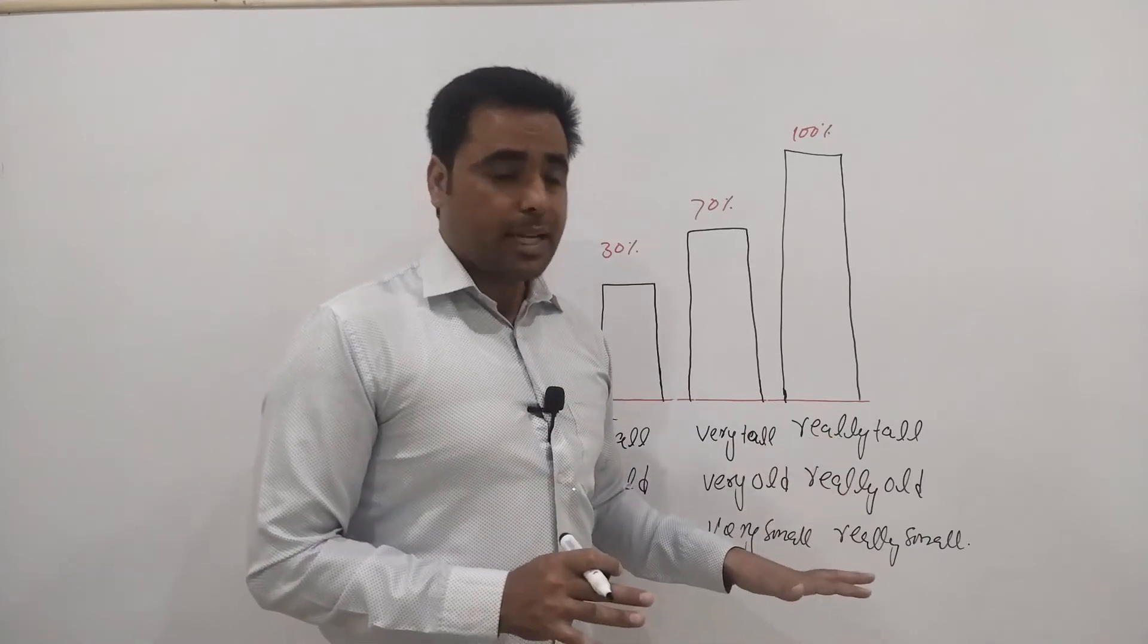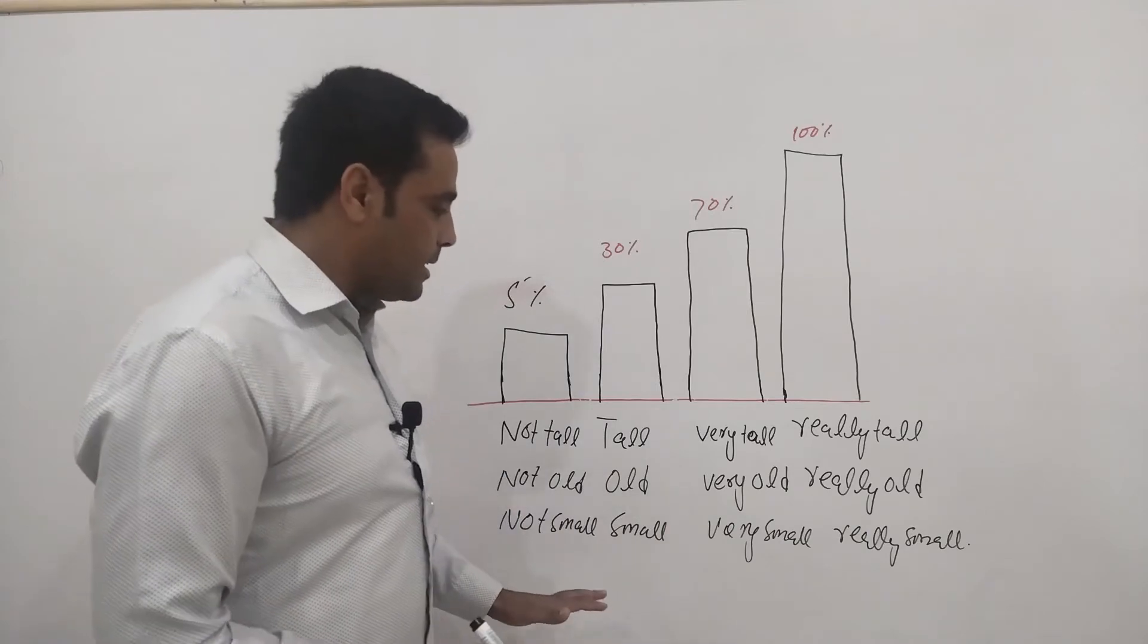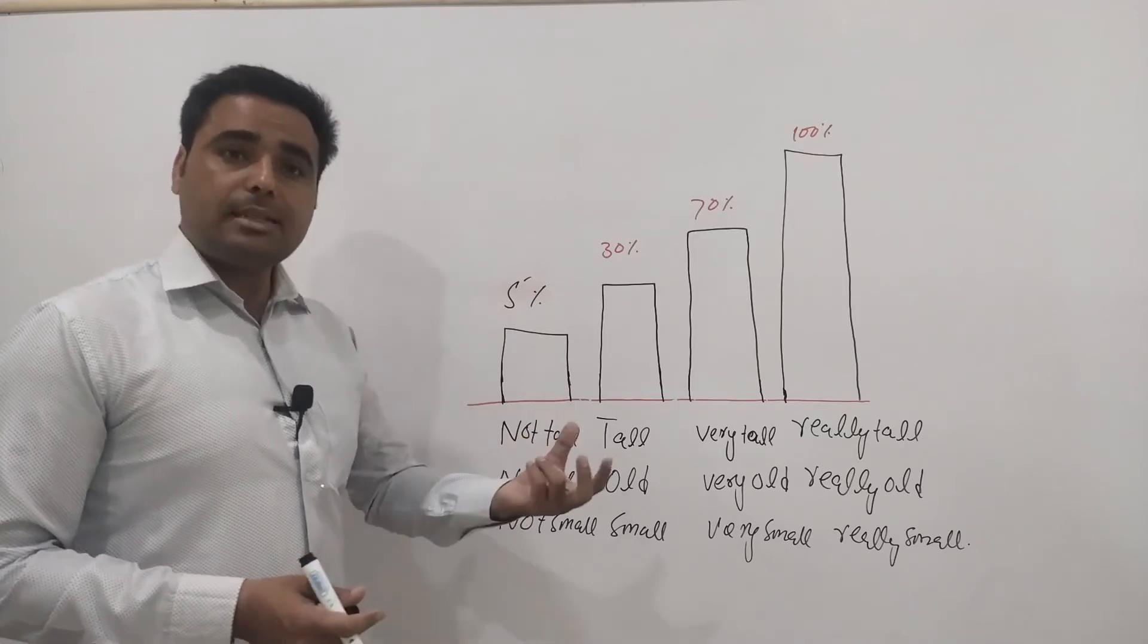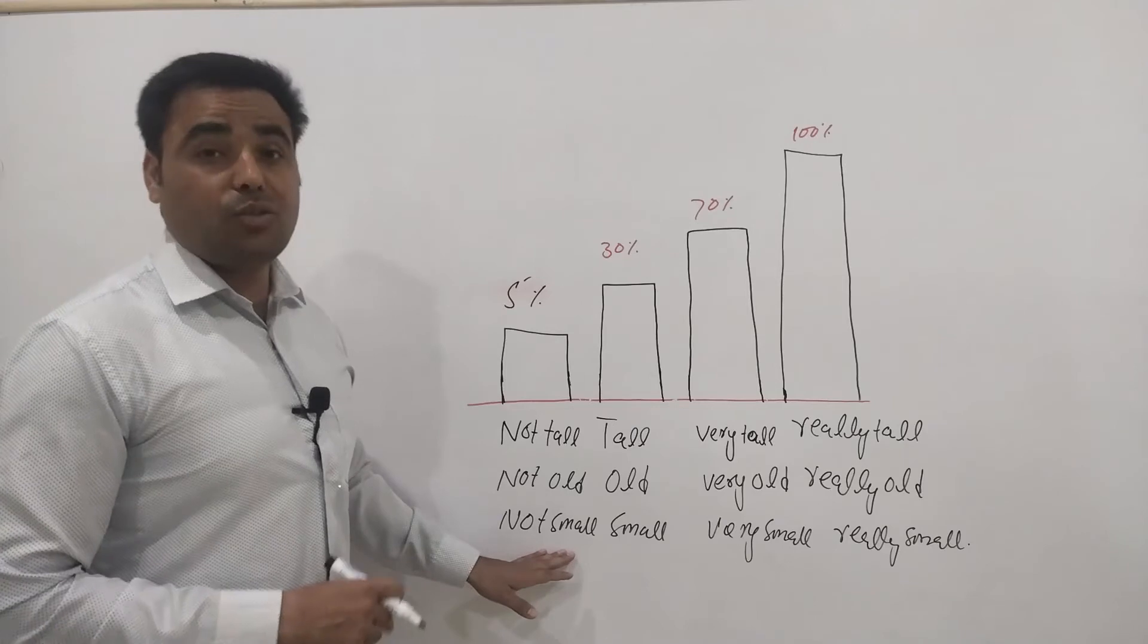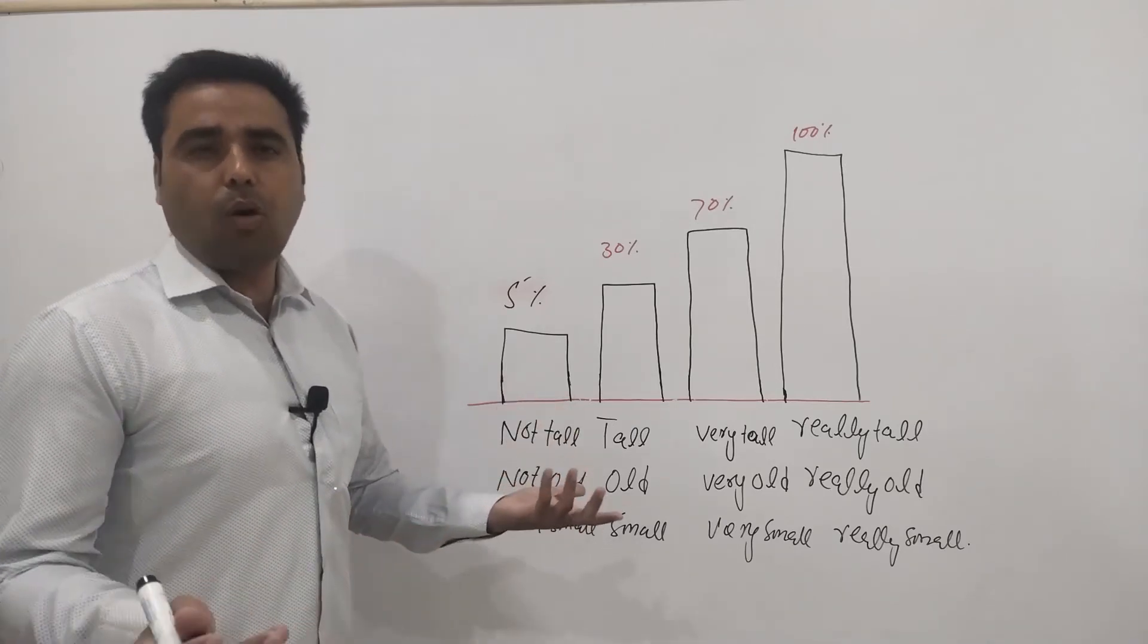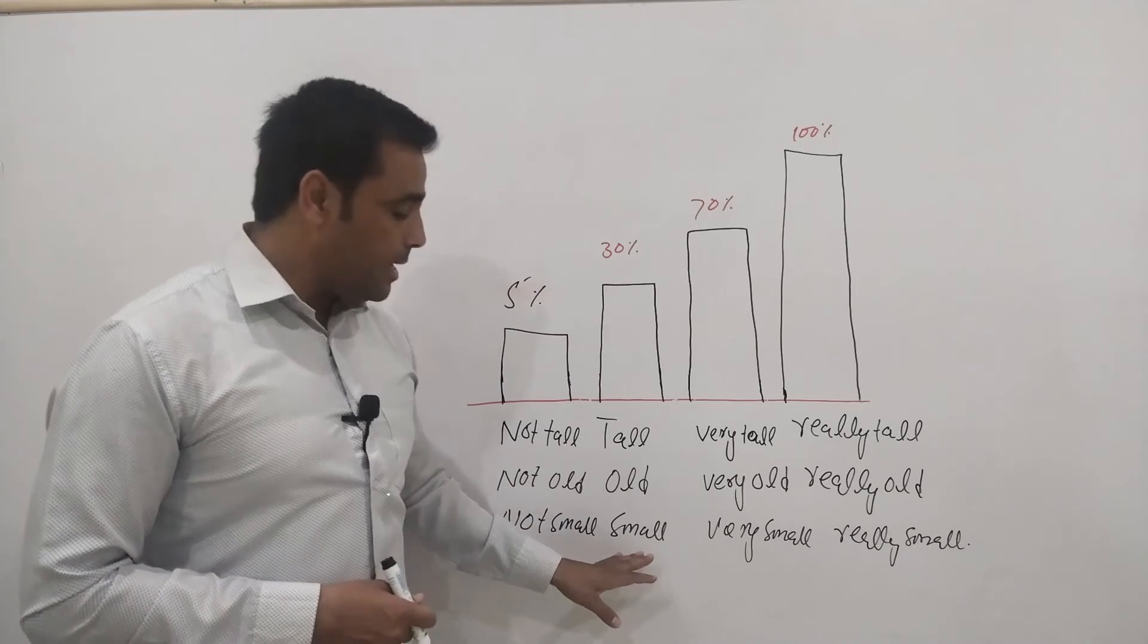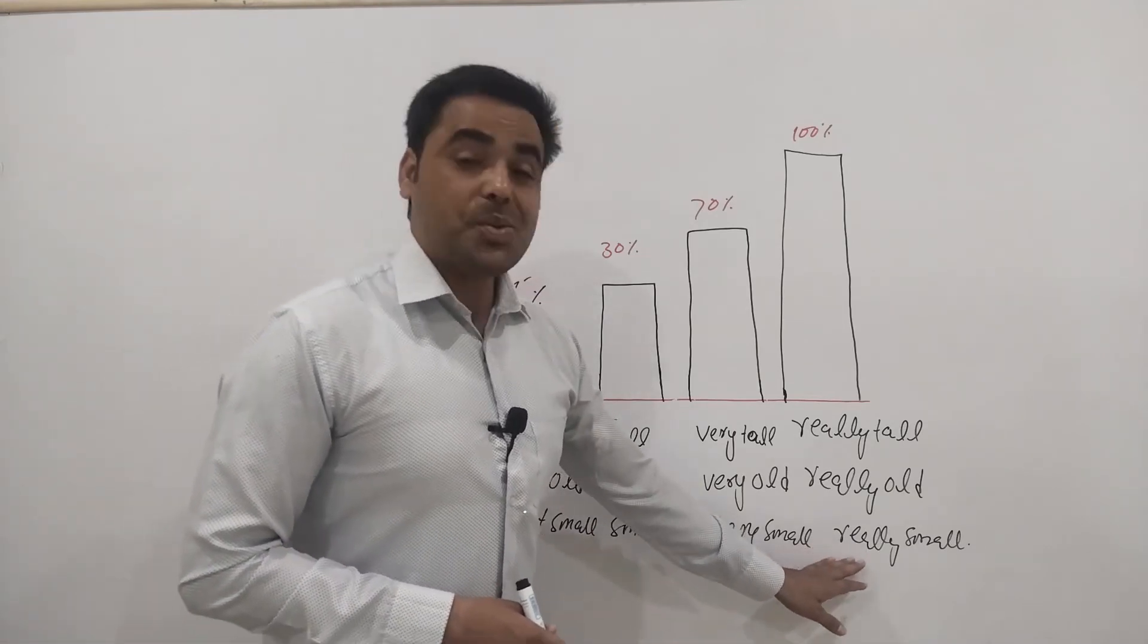You can understand this with the help of this particular diagram. The next one is about small, when you talk about size. It's not small, then it's small, and then very small, and the last one is really small.